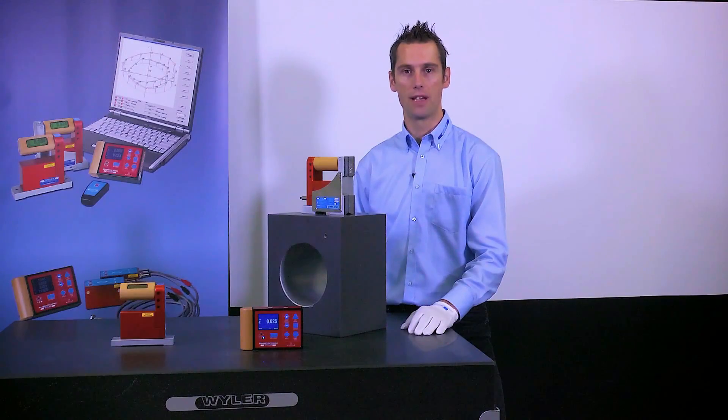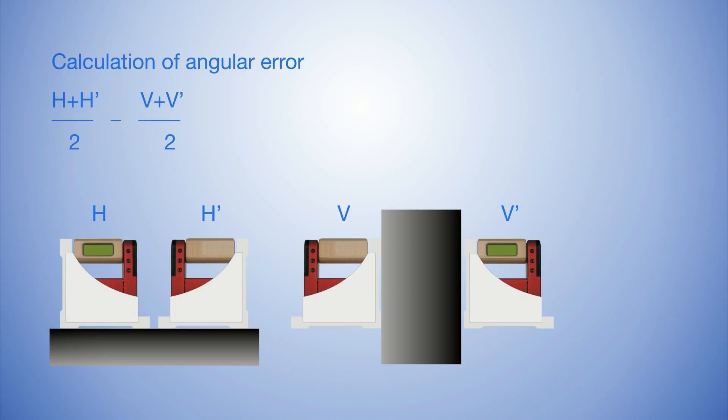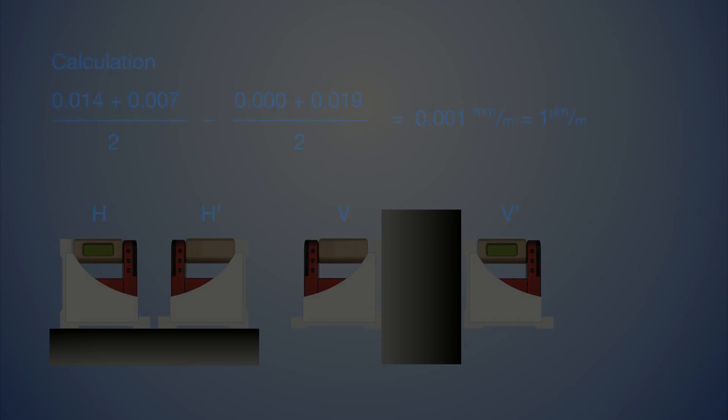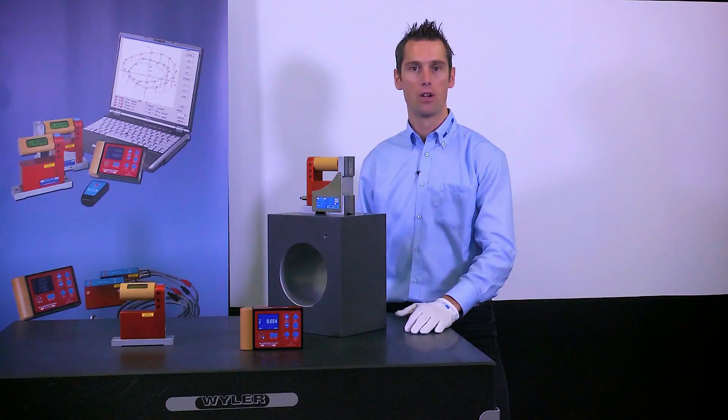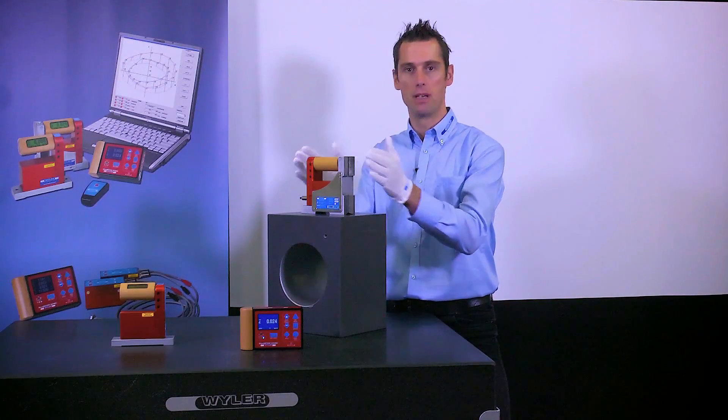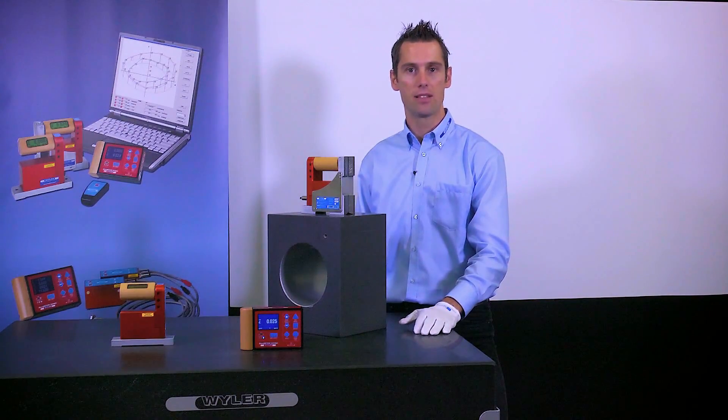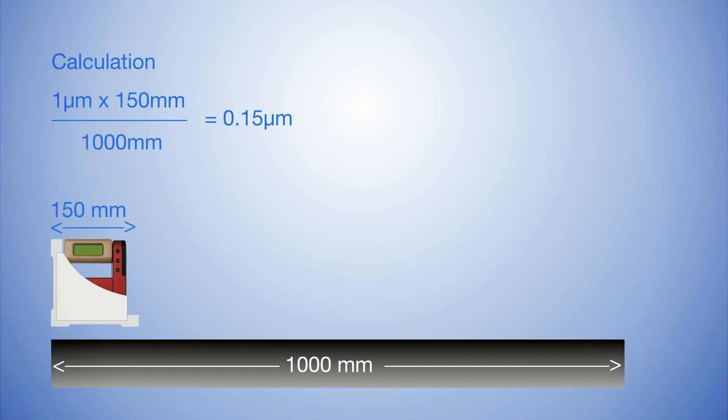After having measured all four values, we can calculate the angular error. Our instrument has an angular error of plus one micrometer per meter. Since the length of the base is not 1000 but only 150 millimeters, the angular error of our instrument is therefore only about 0.15 micrometers.